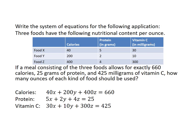The last column is vitamin C in milligrams. Food x has 30 milligrams of vitamin C, food y has 10 milligrams, and food z has 300 milligrams of vitamin C.